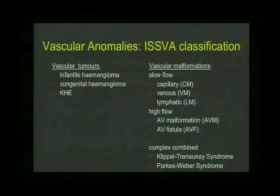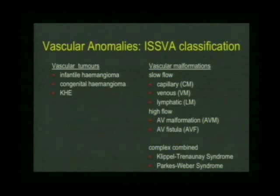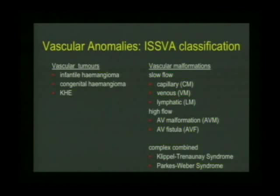In 1996, the International Society for the Study of Vascular Anomalies agreed on a classification of all vascular anomalies. This classification is an excellent biologic classification, with good correlation between clinical features, imaging on different scans, histopathology, some immunostains, and genetics — particularly more so with vascular malformations. The same applies to vascular tumors, where there's good correlation between clinical, imaging, and histopathology, and certain immunostains help clarify some problems.